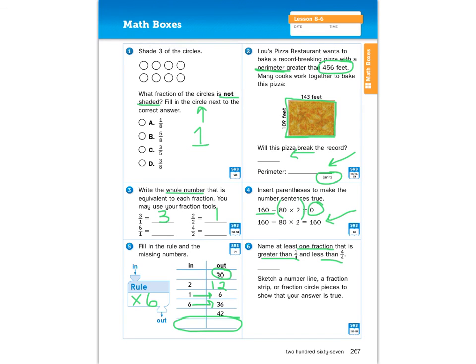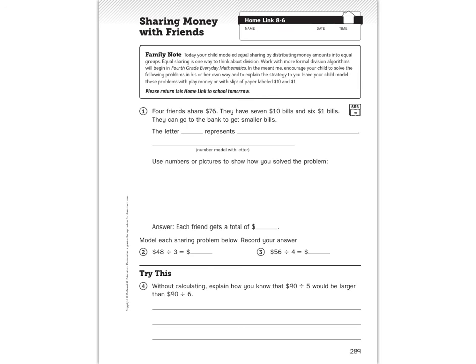Let's go over your home link for tonight. All right, so 4 friends share $76. They have 7 $10 bills and 6 $1 bills, just like what we were working with before. They can go to the bank to get smaller bills. So we're going to come up with a letter that represents, what is it representing? Hint, hint, go back and look in your math journal. We just did problems like this. And then go ahead and put the number model with a letter. I would go ahead and show pictures of how you solve the problem. I'll get you started. I would do the 4 rectangles here, because the 4 rectangles are going to help remind you of the fact that you're sharing with 4 friends. And then you tell me how much each person gets.